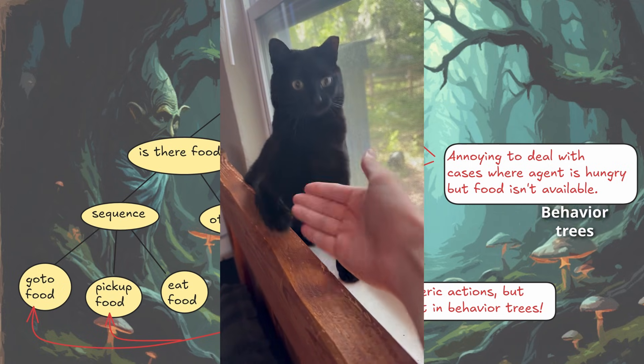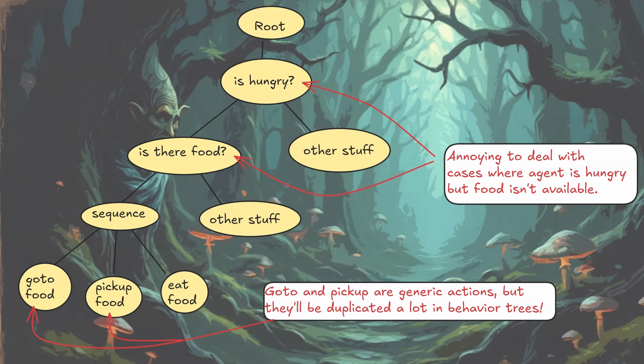But I have some gripes with behavior trees. It can be pretty annoying to deal with cases where there are multiple conditions that have to be satisfied, because you the developer have to think of: what if the agent is hungry but there is no food? What if there is no food but the agent is hungry? There are a lot of edge cases you have to deal with, especially when multiple conditions are in play. Additionally, we could very easily make certain actions generic — like going to food and picking it up could actually be 'go to anywhere and pick up any object.' But in behavior trees you're going to have a lot of duplicates of these simple sequences. For other situations — maybe picking up a weapon to attack something — you have to repeat this same sequence, and there's a lot of repeated interactions that you, the designer, have to remember.